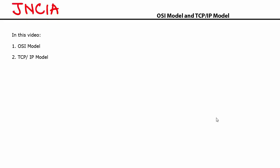Hello and welcome back. In the last video we talked about Juniper certifications and we also looked at the course outline. In this video we are going to focus on two important things: number one is the OSI model and number two is the TCP/IP model. Let's begin with the OSI model.